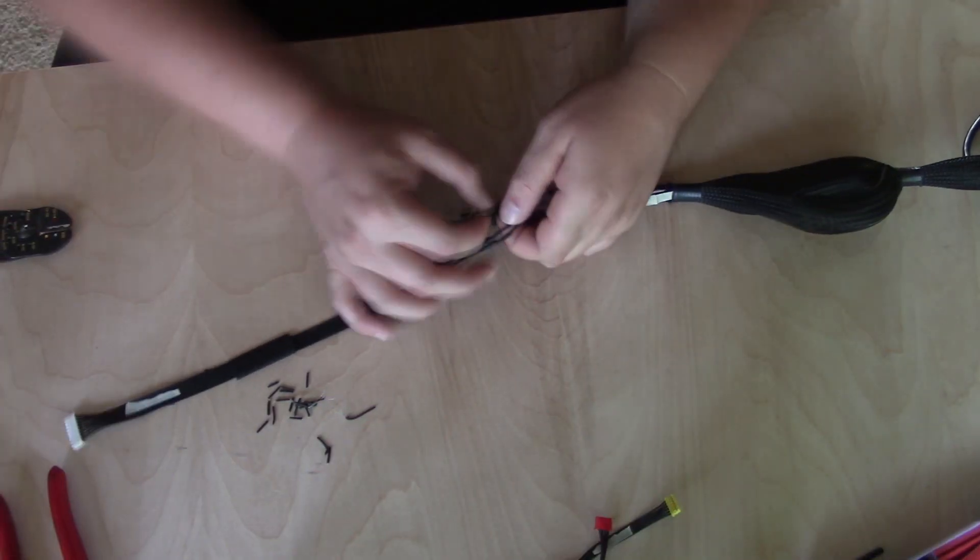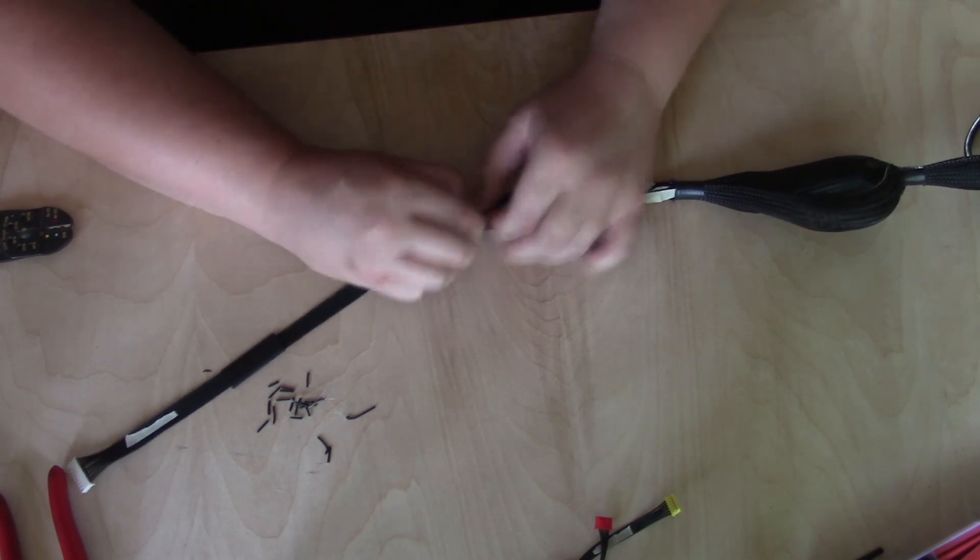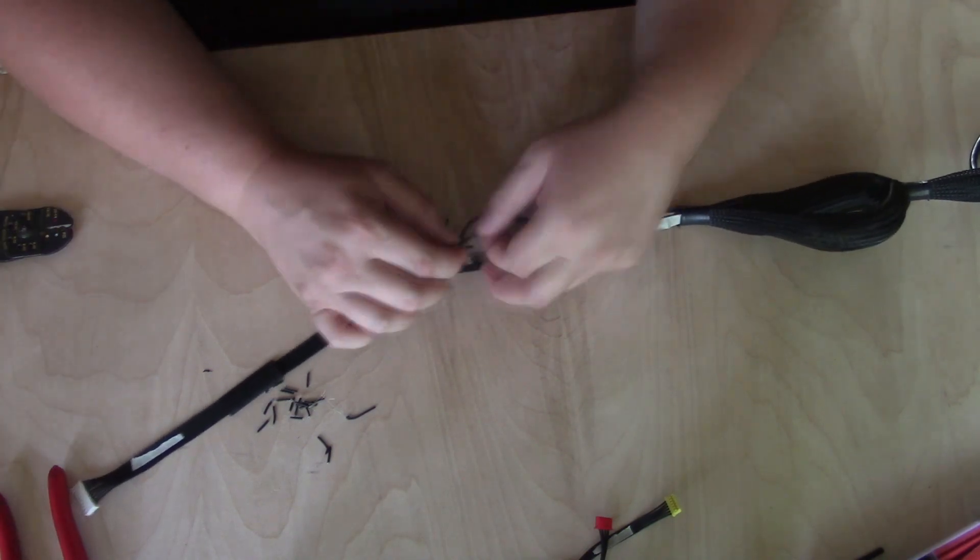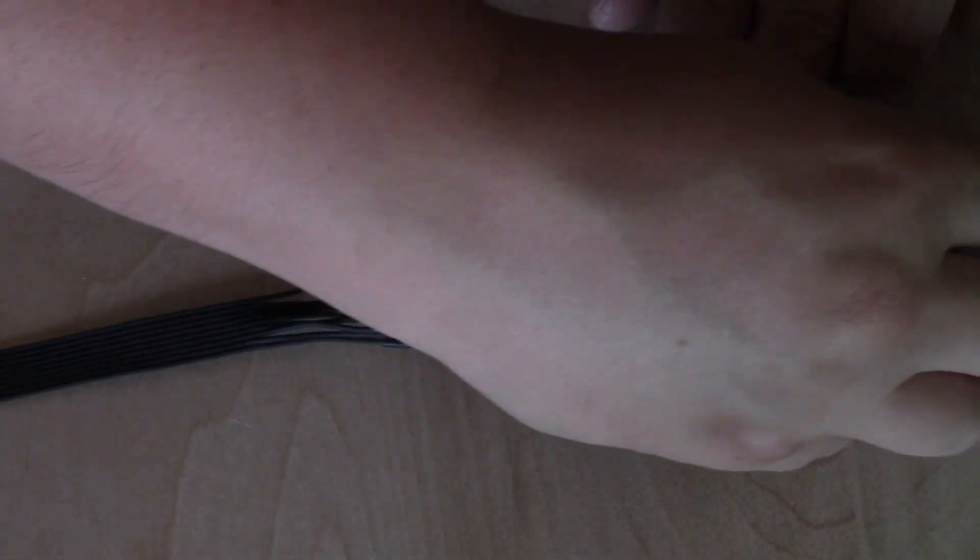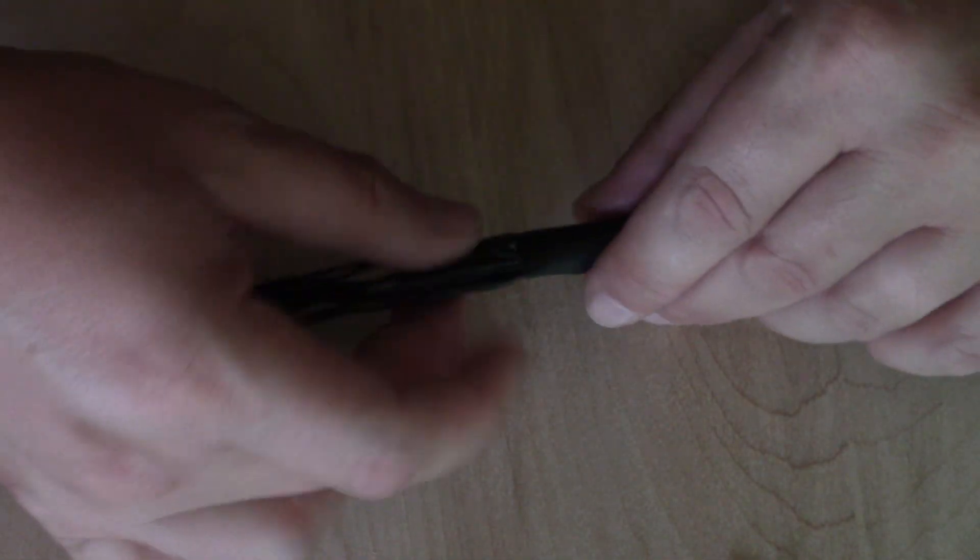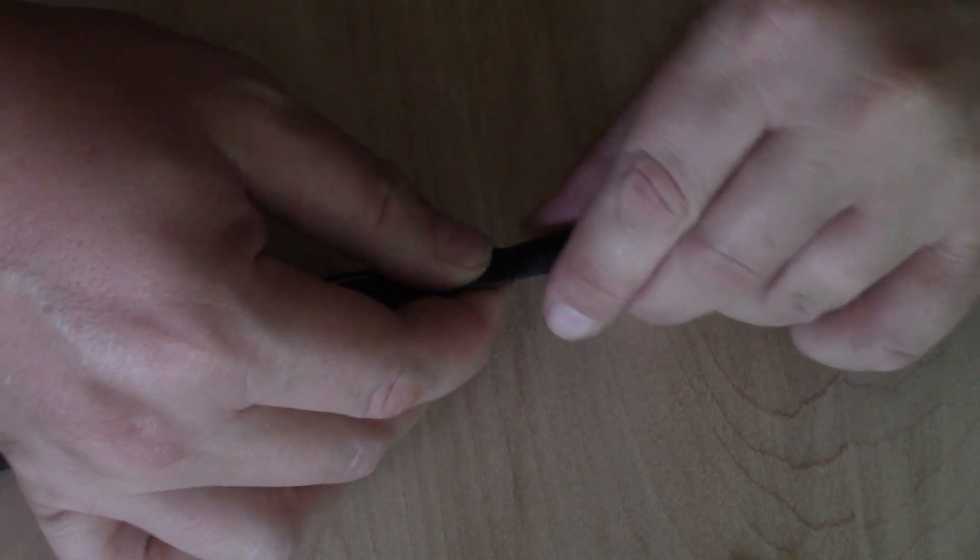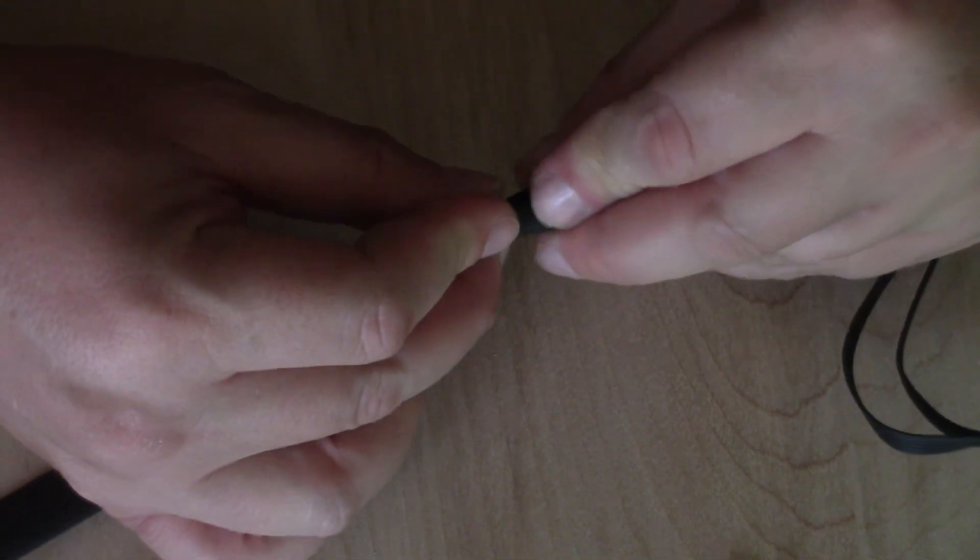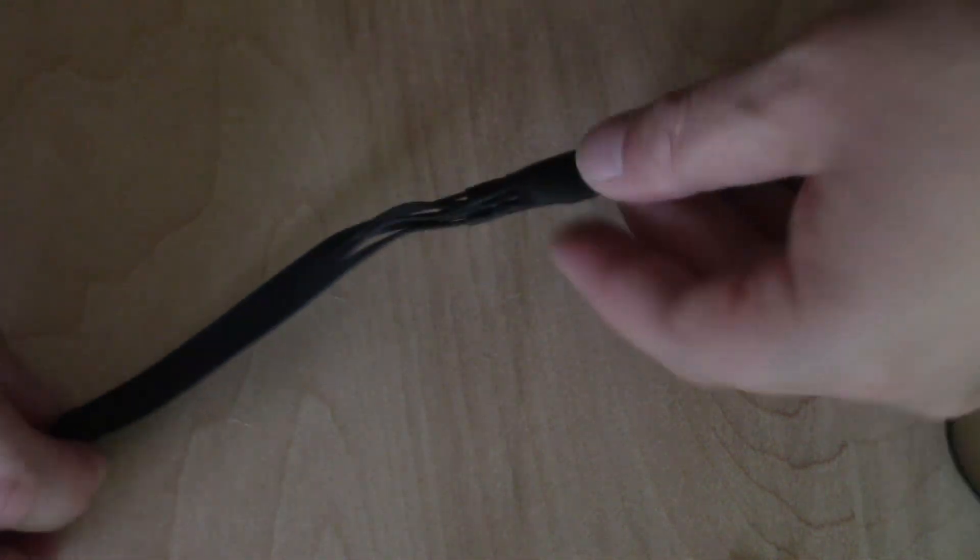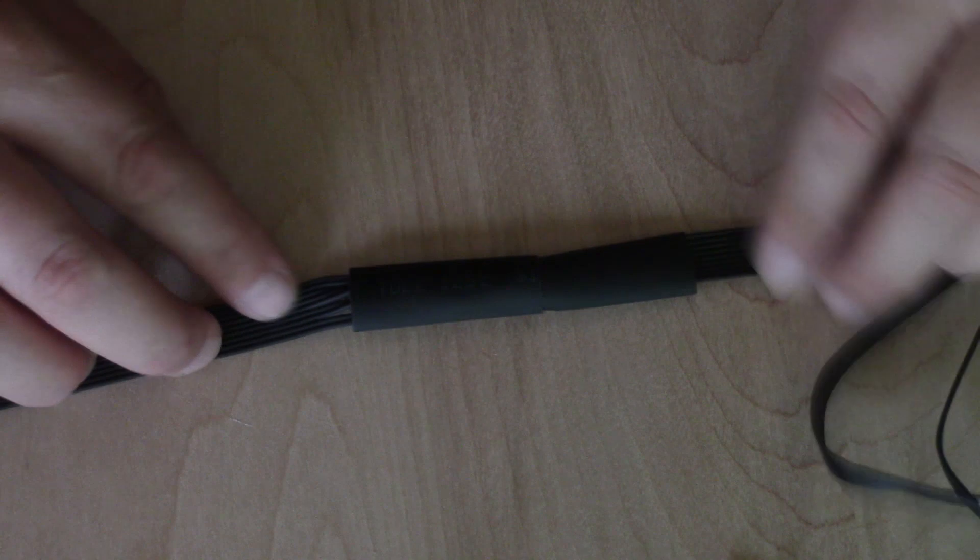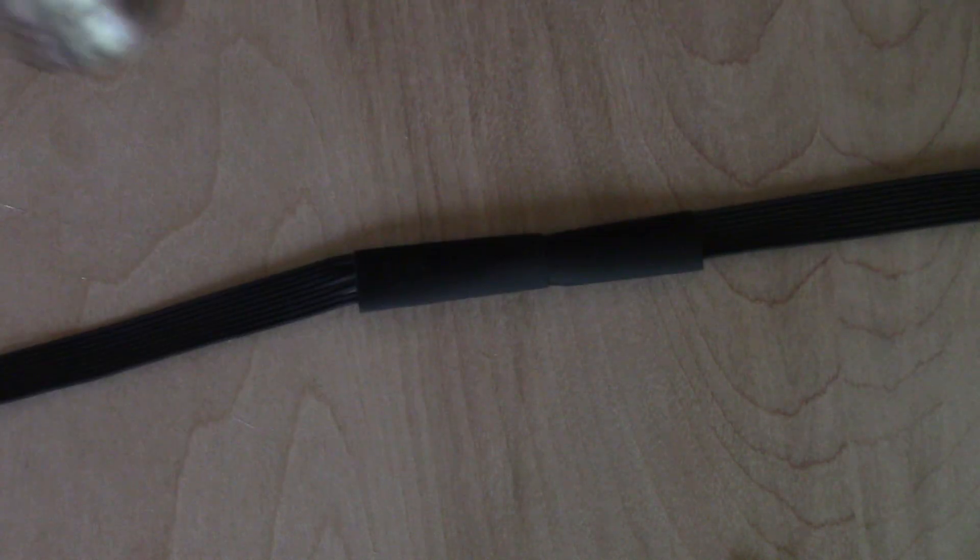We continue doing this for all the connections, making sure we line up each wire with its corresponding wire on the other side. When all the wires are connected and heat shrunk, I then move the large heat shrink tube over the group of spliced wires. I then apply the heat gun and shrink the tubes over all of the connections.